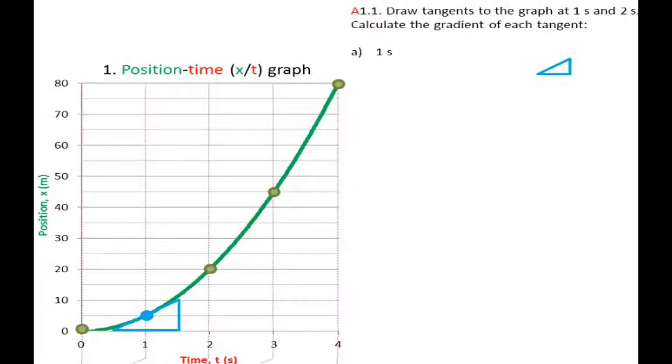Here is a tangent to one second. I can extend the tangent as long as I like because the gradient of the tangent will be the same no matter how big I make the triangle. But let's use this because this is convenient. Then we calculate rise over run.